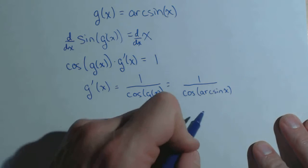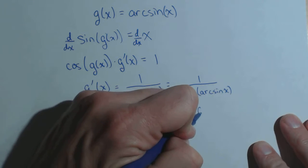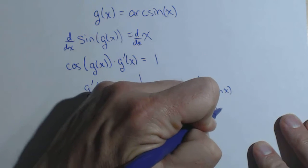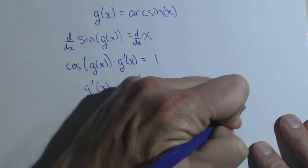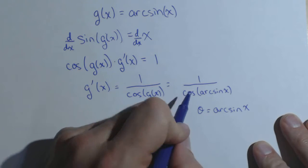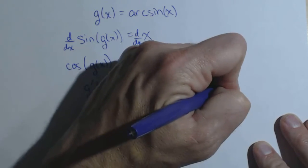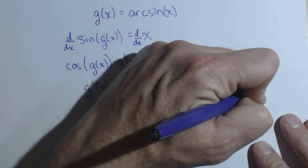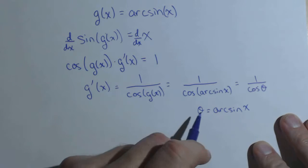Now off to the side here, I'm going to do a little substitution. I'm going to let theta equal arc sine of x. And that tells me two things. Number one, this becomes one over cosine of theta based on my substitution.